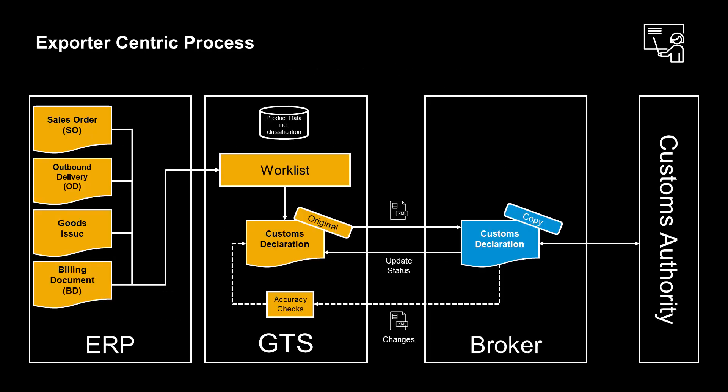SAP GTS sends a customs declaration request based on an export customs declaration to the customs broker, so that they can create a customs declaration in the official format and communicate it to the customs authorities. The customs broker can supply missing information if any. However, the broker should not change data already provided by GTS.